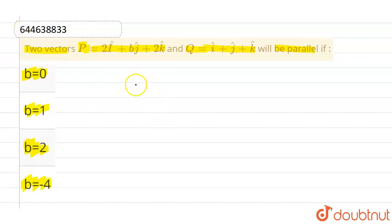Now we know that whenever two vectors are, let's suppose p vector which is given as 2i cap plus bj cap plus 2k cap, and the second vector q vector which is i cap plus j cap plus k cap. If these vectors are parallel, then we can say that the cross product of them will be 0.